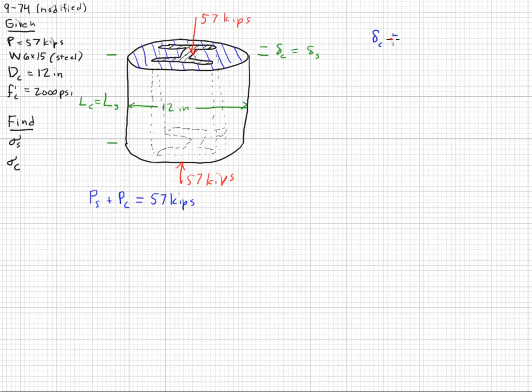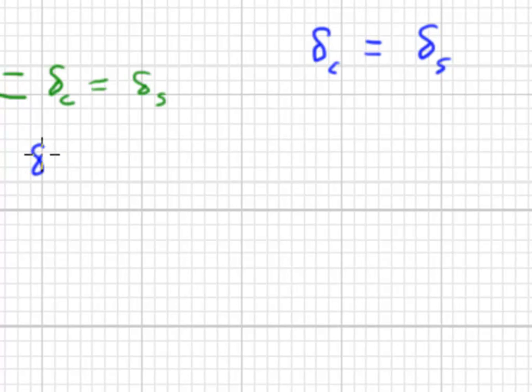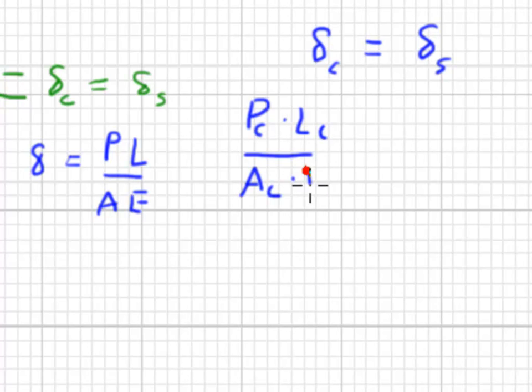Rewriting it, the deflection of the concrete is equal to the deflection of the steel. Now our deflection equation, according to Hooke's Law, is the force times the length over the area times the modulus of elasticity. So we'll just put the subscripts in here, the force on the concrete times the length of the concrete, all over the area of the concrete, times the modulus of elasticity of the concrete, equals the force of the steel, times the length of the steel, all divided by the area of the steel and the modulus of elasticity of the steel.